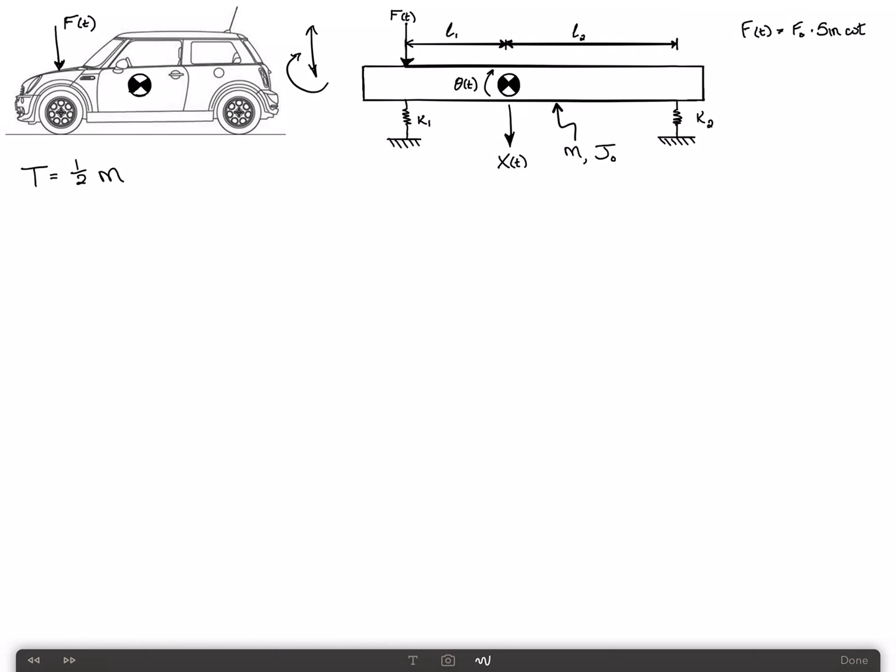Because we can write the velocity of this mass, the rotational velocity is just theta dot, and the pitch plunge velocity is just X dot, we should expect, since there's no coupling in the velocity, that we should have a diagonal mass matrix. On the other hand, since the displacement of the springs involve both X and theta, we should expect that there will be coupling in the stiffness matrix. So the stiffness matrix will not be diagonal.